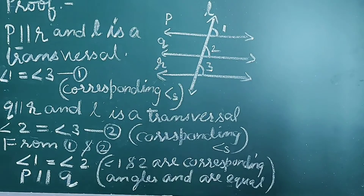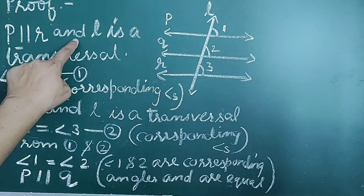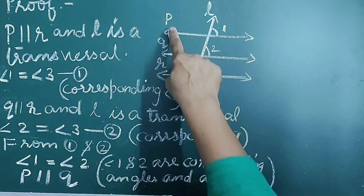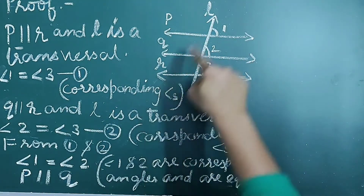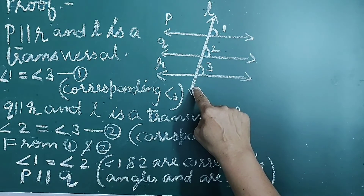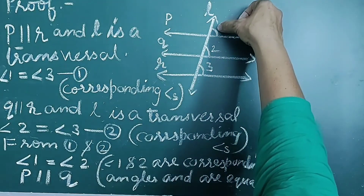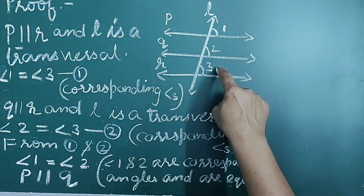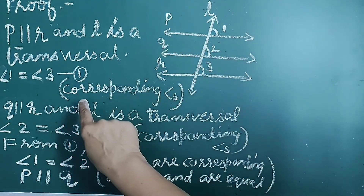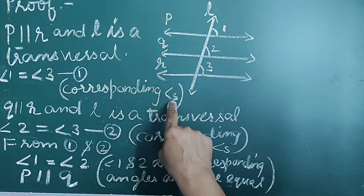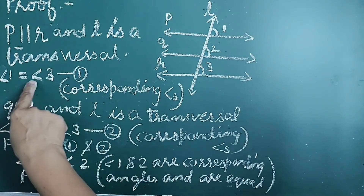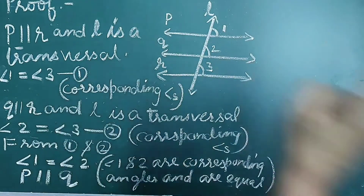Proof: Line P is parallel to line R, and L is a transversal. Therefore, angle 1 equals angle 3, because they are corresponding angles. This is equation number 1.